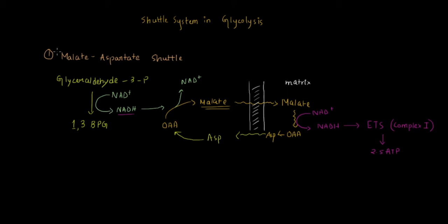So this is the Malate-Aspartate shuttle system. The important point is that NADH carrying the electron cannot go inside the mitochondria directly — that is why it feeds the electron to malate, and malate carries the electron into the mitochondrial matrix, where NAD+ is converted to NADH, which feeds the electron into Complex 1 of the electron transport system, generating 2.5 ATP.